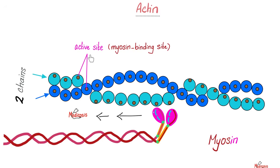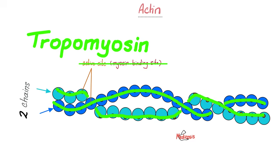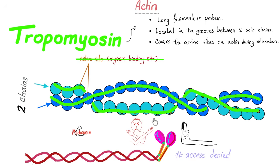But should those active sites stay exposed all the time? No — this would lead to continuous contraction with no relaxation until you die. So tropomyosin came to cover and hide those active sites. Why is it called tropomyosin, not tropoactin, even though it is attached to the actin? Because the tropomyosin is facing the myosin, preventing myosin from attaching. Tropomyosin is a long filamentous protein located in the grooves between the two actin chains, covering the active sites on the actin and preventing myosin from attaching.